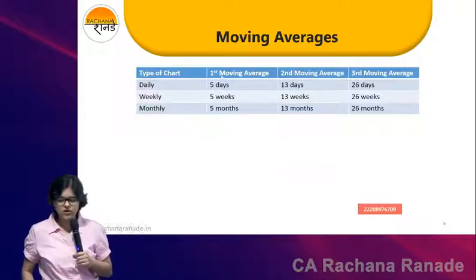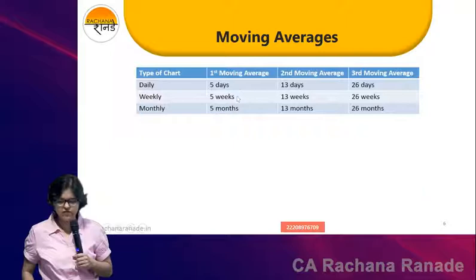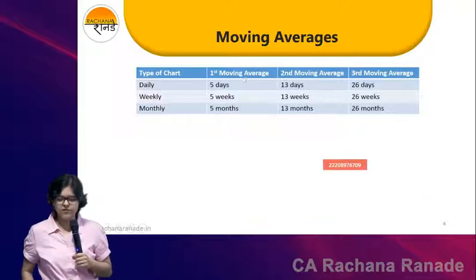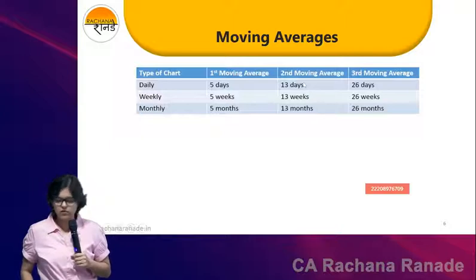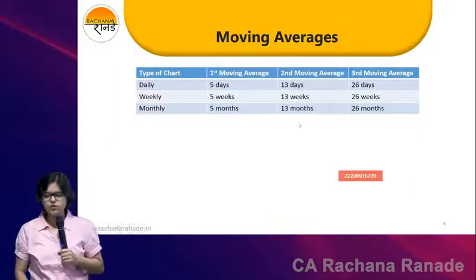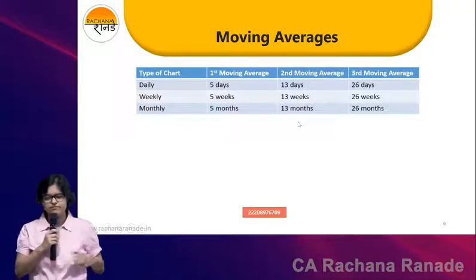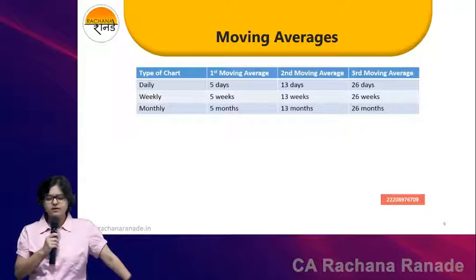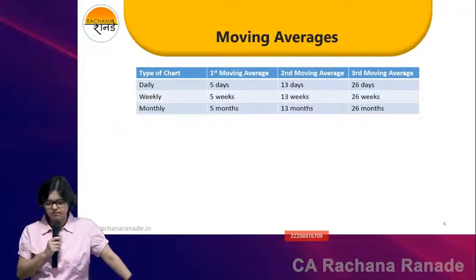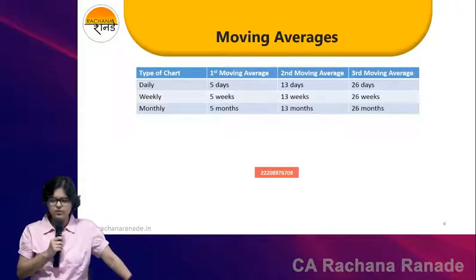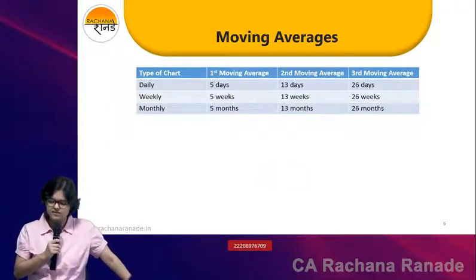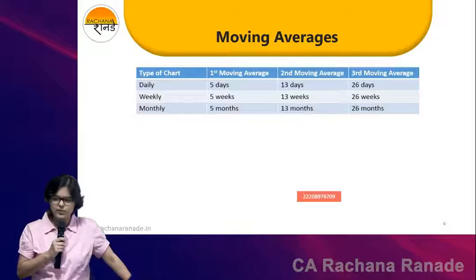For the 1st moving average column, write down 5D, 5W, 5M. For the 2nd column, write 13D, 13W, 13M. And the last column would be 26D, 26W and 26M.